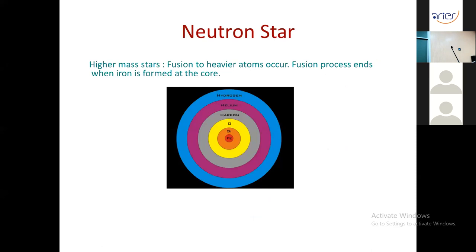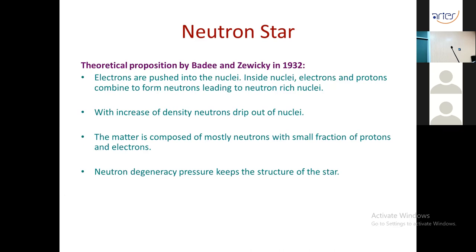The first question is: what is the relation between neutron stars and nuclear matter? Electrons are pushed into nuclei and combine with protons to form neutrons, making the nuclei neutron-rich. When density reaches 10^11 g/cc, neutrons drip out of the neutron-rich nuclei. The matter inside the collapsed core becomes free neutrons with a small admixture of protons and electrons, and neutron degeneracy pressure balances gravity to form a neutron star.